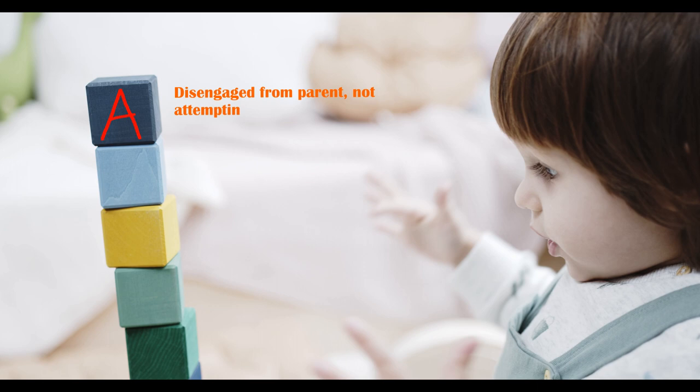Cluster A would show as much attachment behaviour with the stranger as it did for the mother. These children had generally learned not to engage with the mother for attachment needs, and although anxious, they would not look for soothing or proximity.